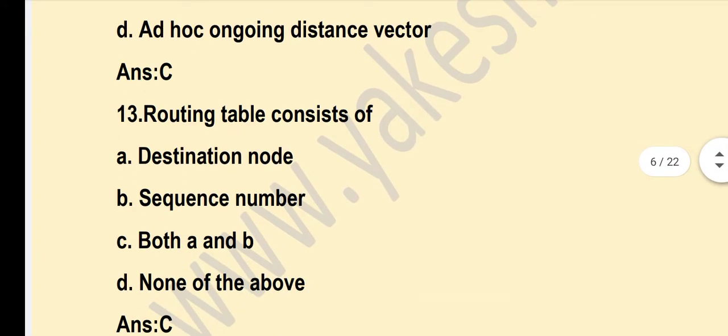Next question: A routing table considers? Option C — Both A and B — is the correct answer. The routing table includes destination node and sequence number. Both options A and B are correct.